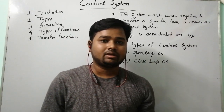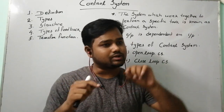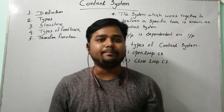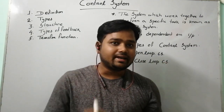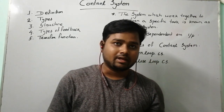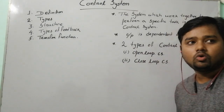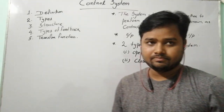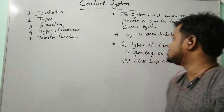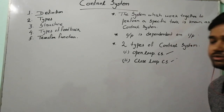We know that in every system there is an input as well as an output. If the output depends upon the input, then it is known as a control system. We know that there are two types of control system: one is the open loop control system and one is the closed loop control system.